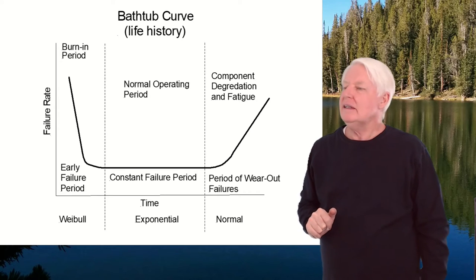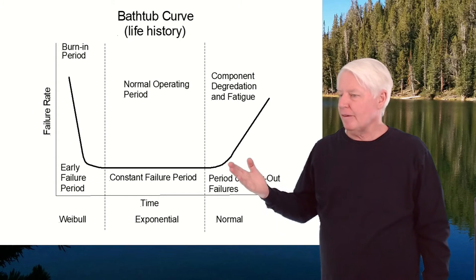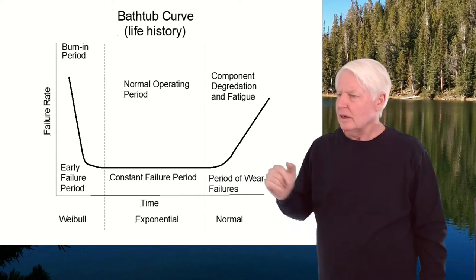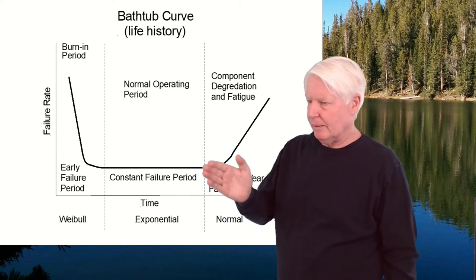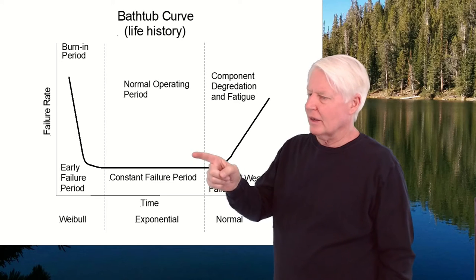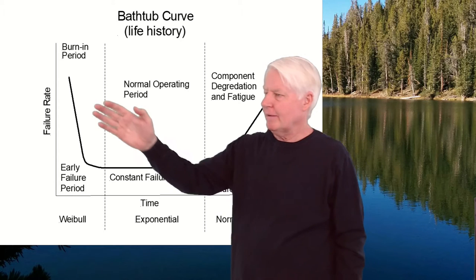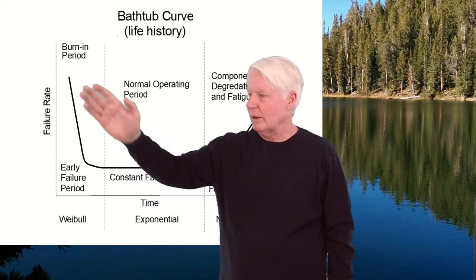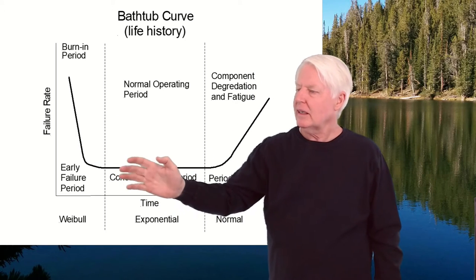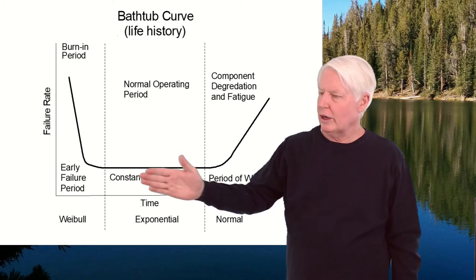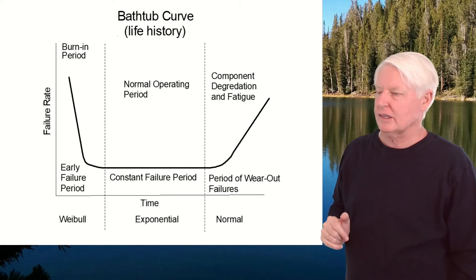That's the bathtub curve, and we use it all the time in reliability engineering. Many products follow this curve, but not always completely. For example, if there's preventative maintenance, the item is put out of service and replaced, so the wear-out portion may be gone. And if you have a great incoming inspection program, that can eliminate the burn-in portion. If you have both, you'll essentially have a straight, constant failure rate line. But in theory, this is a good model to study.